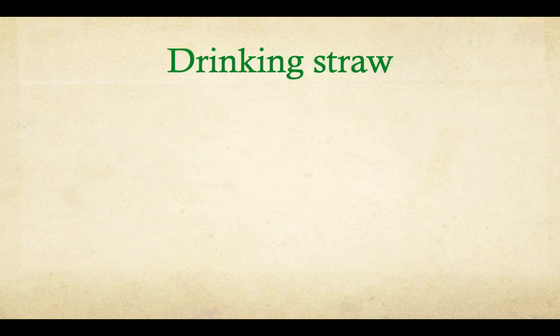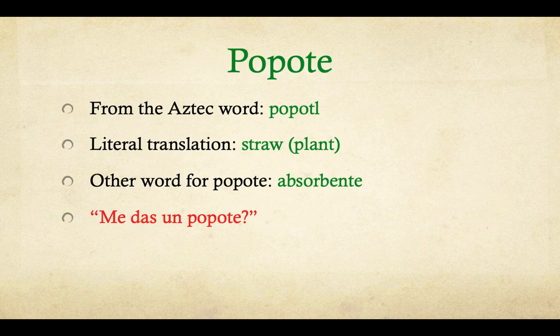Drinking straw. 'Popote' comes from the word 'popot.' The literal translation is 'straw,' referring to the plant that horses eat. Another word for popote is 'absorbente' — and the country that uses that term is Cuba. Example sentence: '¿Me das un popote?'